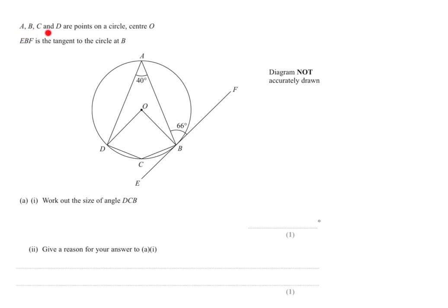In this question, we're told that A, B, C, and D are points on a circle, which has a center of O, and EBF is a tangent to the circle at point B. Diagram is not to scale, so do not take any readings off the diagram. If you do, they will definitely be wrong, and you won't score any marks. In part A, it says work out the size of angle DCB. DCB is this angle here.